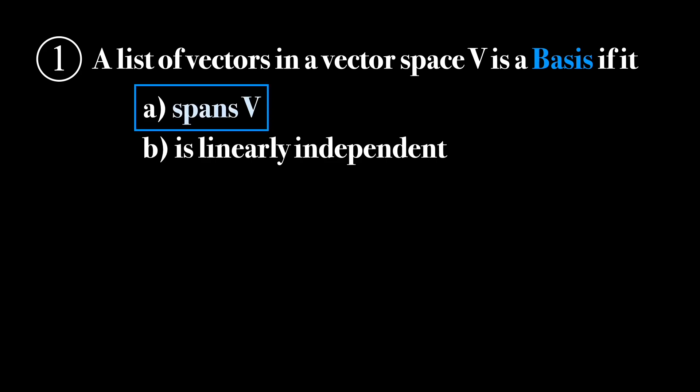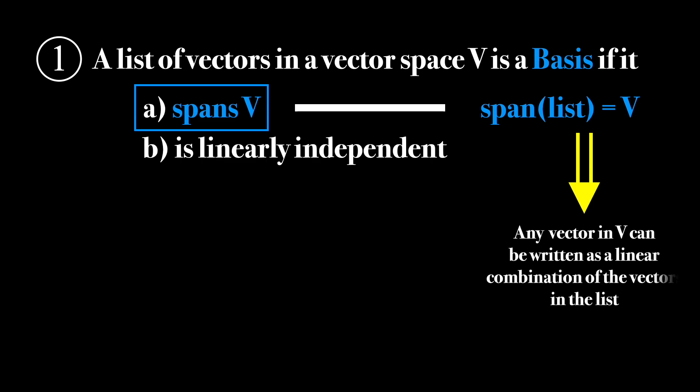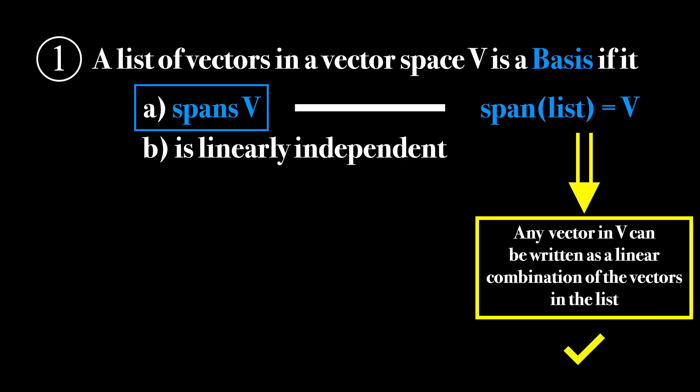So what does it mean for a list to span a vector space? All it means is that the span of the list is equal to the entire vector space. And since the span is just the set of all linear combinations, a very important implication of this is that any vector in the space can be written as a linear combination using only the vectors that make up the list. I can't stress enough how useful this simple fact is — it shows up again and again in many linear algebra problems as well as quantum mechanics problems.